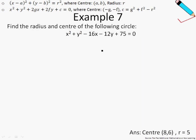Moving on, let's look at example number 7. We will evaluate the radius and the center of the following circle by using Formula 2, as you can see on the top of the screen. First and foremost, let me write out Formula 2 side by side so you can see very clearly what it is that I'm looking for.